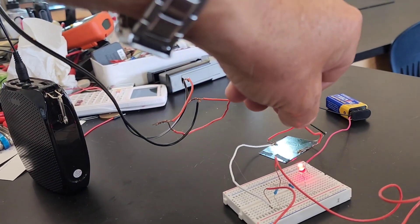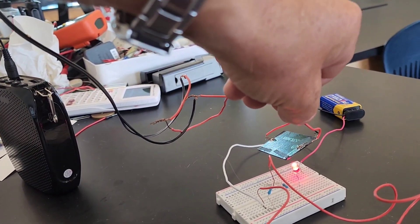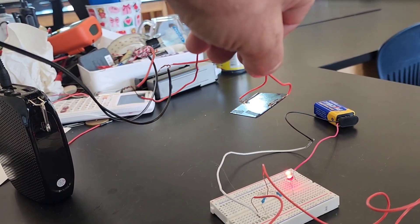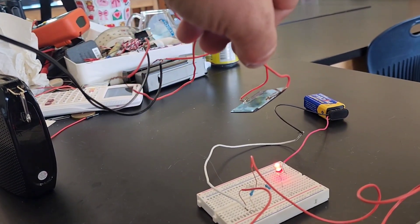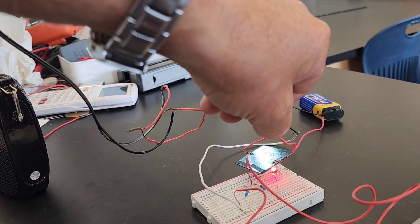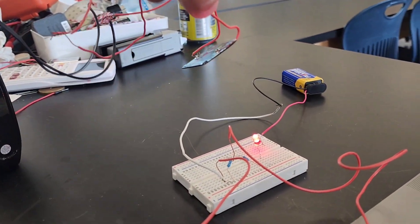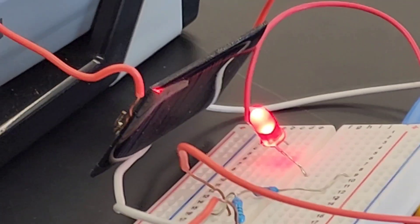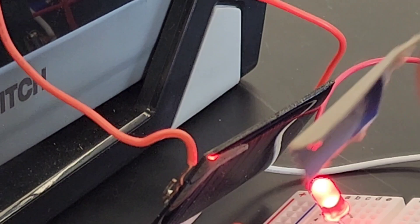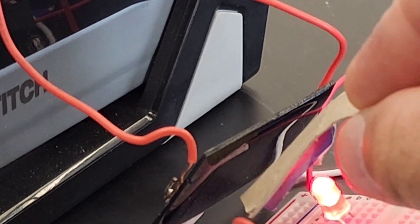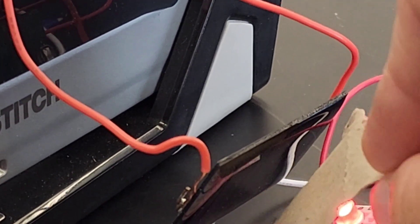Notice that it gets quieter as I pull the photovoltaic cell farther away, louder when I get close. It becomes even clearer that signal is riding on the light from the LED when you see and hear that the sound goes away when you block the light from the LED with a piece of cardboard.